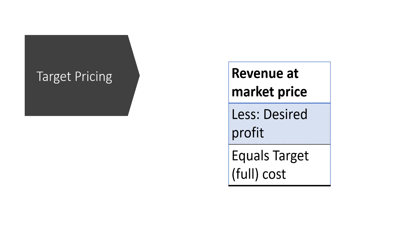For the target pricing approach, we go in reverse. We look at the selling price first — and the selling price is given to us by the market, because we are selling a generic product, not a unique one. We cannot charge higher than what the market offers. So we take the market's selling price, deduct our desired profit — which remains the same as in cost-plus pricing — and what remains is our target cost.